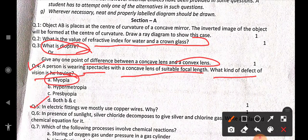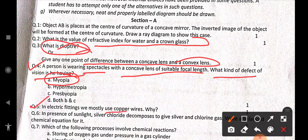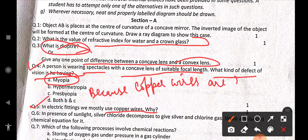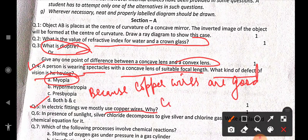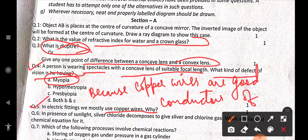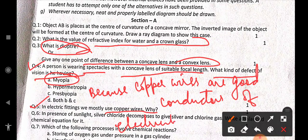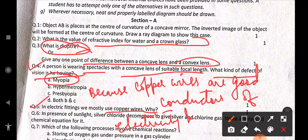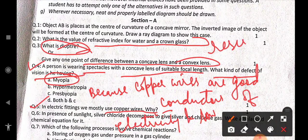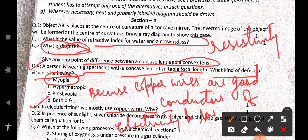Next. In electric fittings we mostly use copper wires. Why? Because copper wires are good conductors of electricity and they have low resistivity. And they have low resistivity.